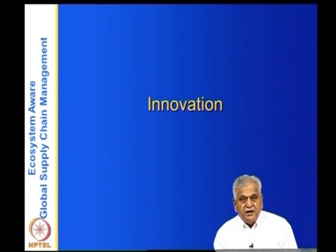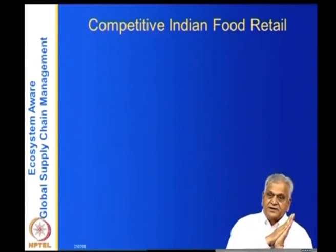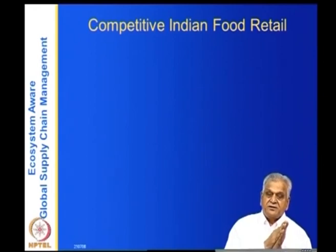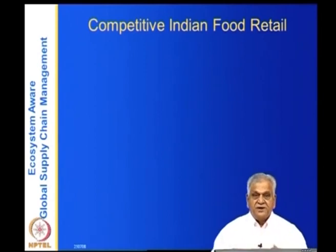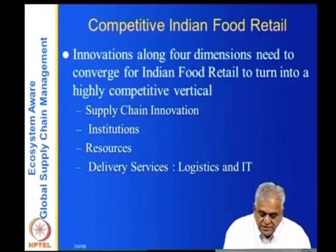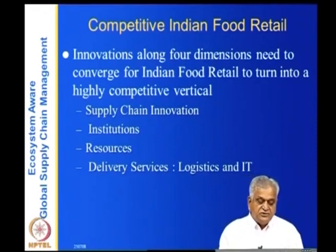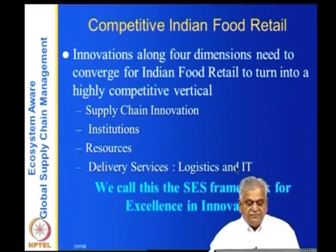Looking at innovations: the Indian food supply chain is weak, but it is possible to make it competitive by borrowing concepts from other supply chains and food supply chains in other countries. You need not invent much — these are 'new to the market' kinds of initiatives. Innovations along four dimensions need to converge for Indian food retail to become highly competitive: supply chain, institutions, resources, logistics, and IT — the SCS framework for excellence in innovation.